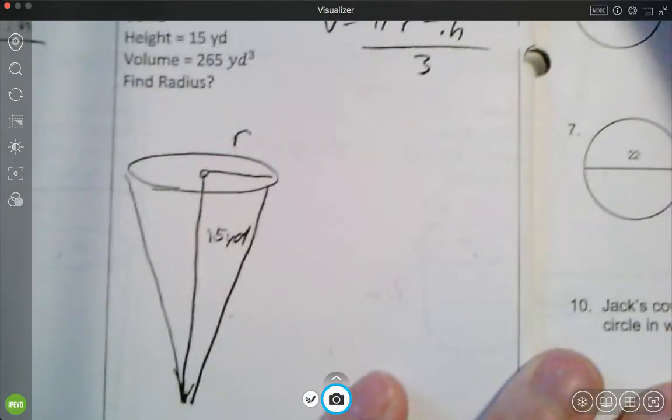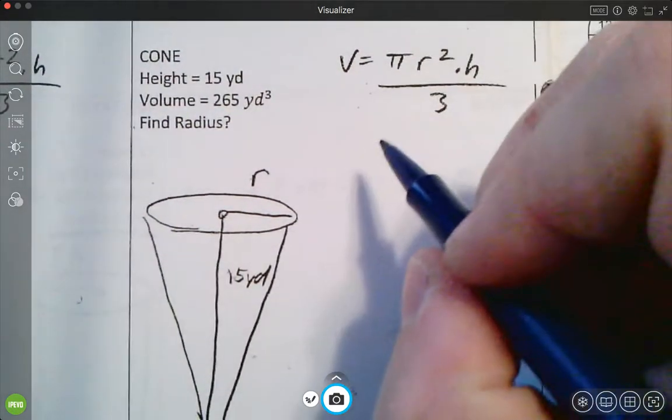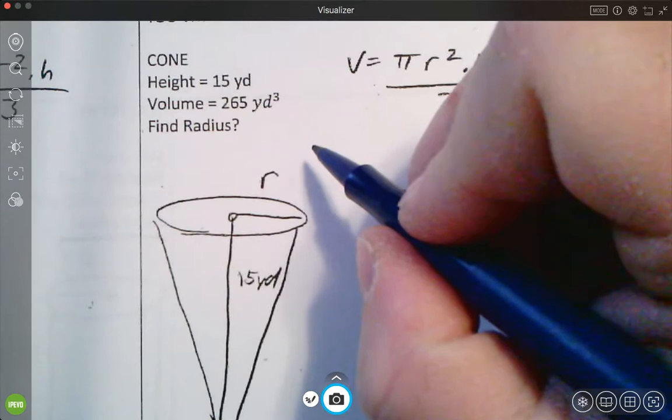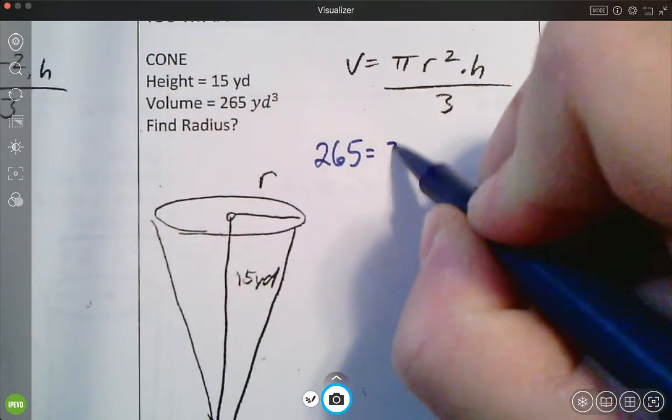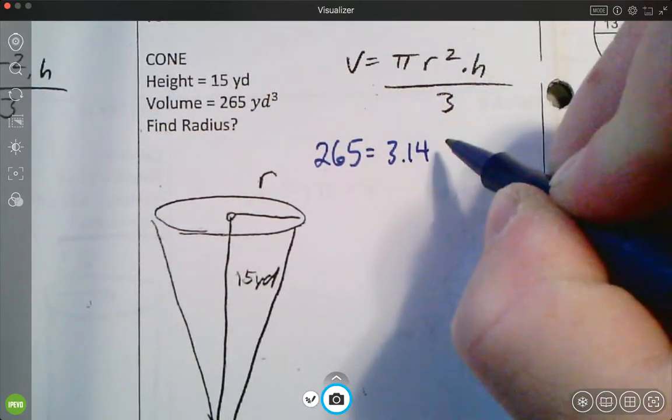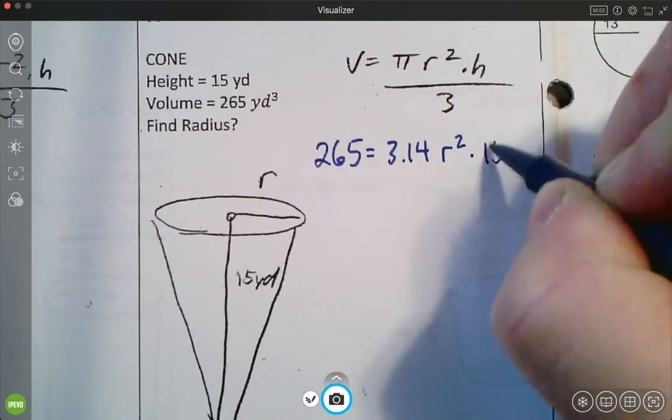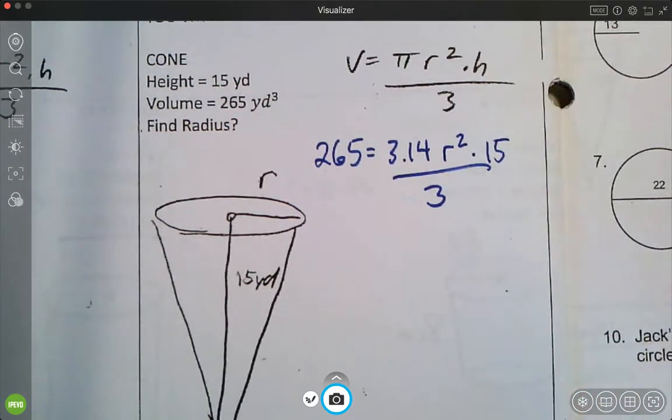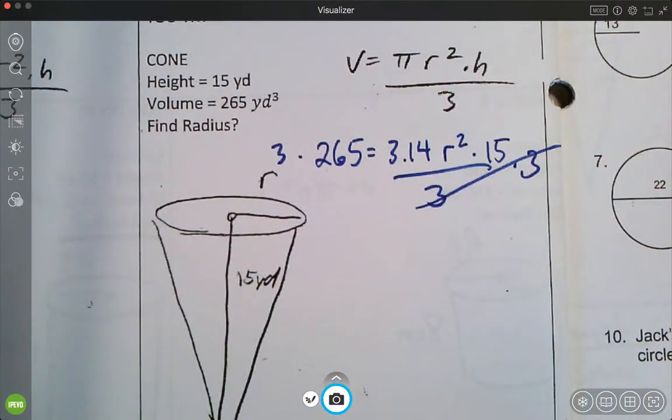Alright. And last but not least is number four. So this one, you're going to have to do two tricky things. You're going to multiply both sides by 3 to start, and at the end, when you find the radius, you're going to have to square root. So here it goes. So plug in my volume, and that is 265, 3.14, my radius, I don't know anymore, times my height of 15, all divided by 3. Alright. I'm going to clear that fraction. Multiply this side by 3. Multiply this side by 3.